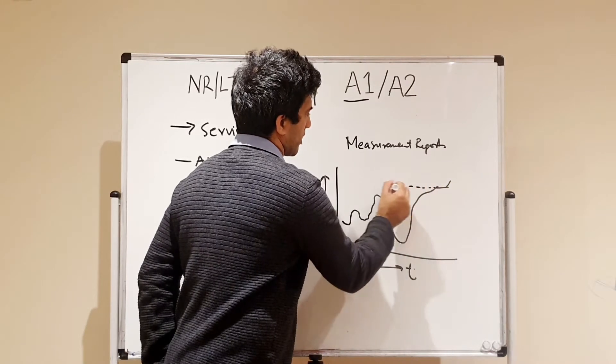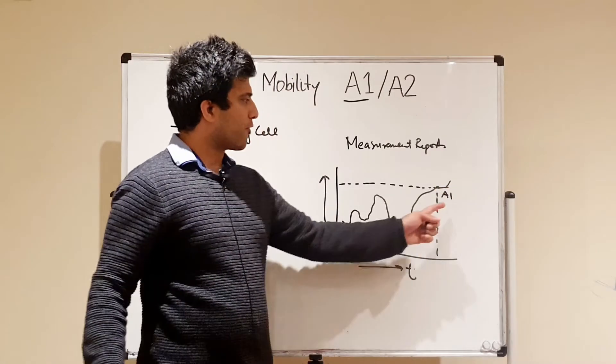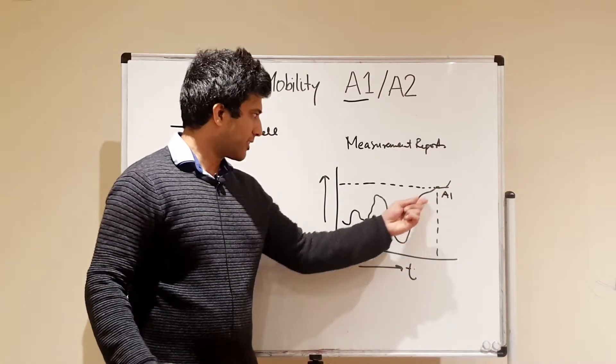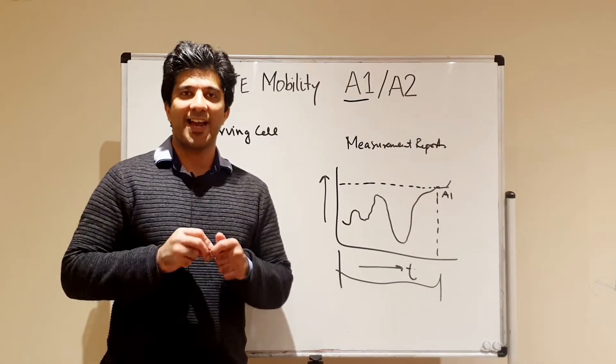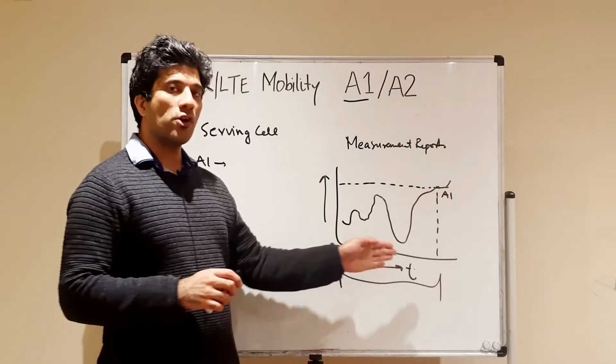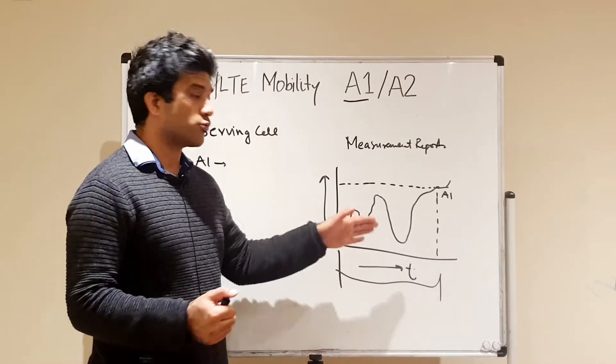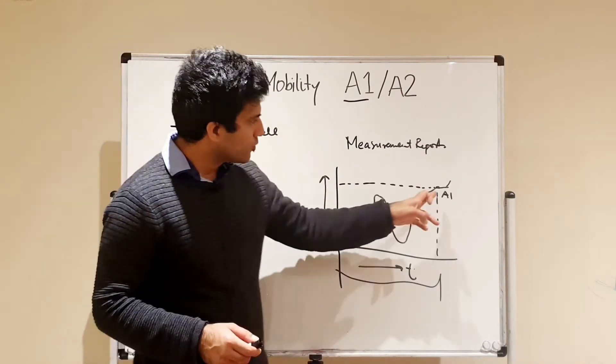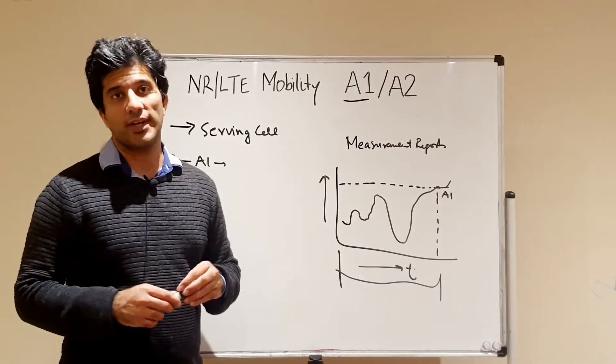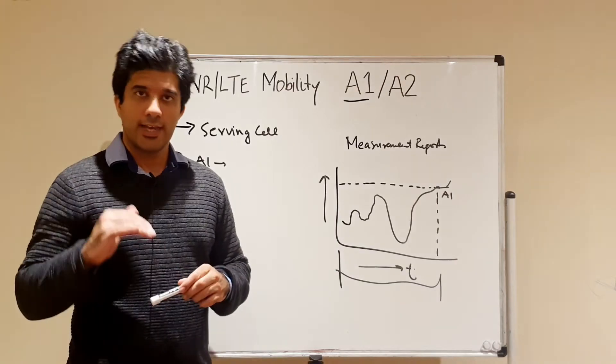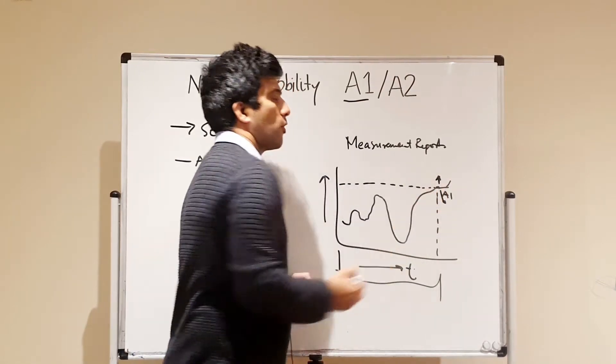So if this is your A1, before this A1 event, in this region, in all of this region, your measurement reports will have been activated and your UE will be constantly sending measurement reports for your serving cell and for the allocated neighbor cells to your eNodeB. As soon as this level touches this threshold and goes above it, then your UE will stop basically sending your measurement reports.